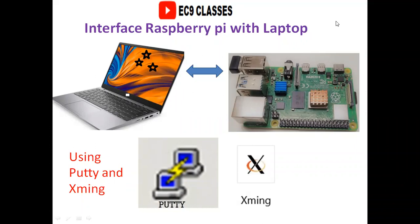Hello friends, welcome to my channel EC9 Classes. In this video, we are going to observe how to interface the Raspberry Pi 3 model or 4 model with the laptop. Even though it is a Raspberry Pi 3 or 4 model, the processor is the same. For that, we need to be ready with software like PuTTY software, Xming software, and Raspberry Pi OS software.